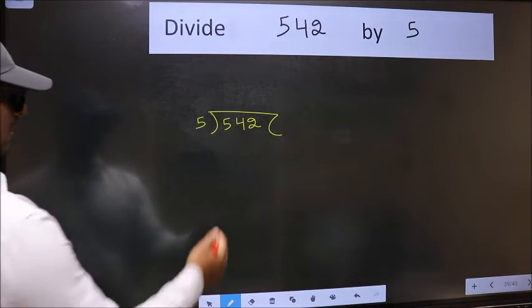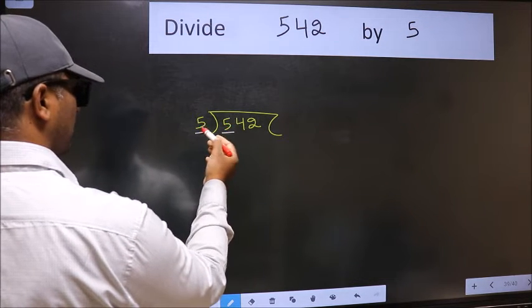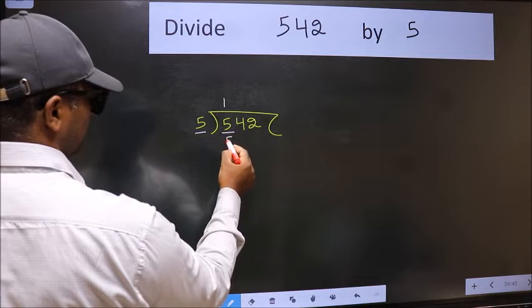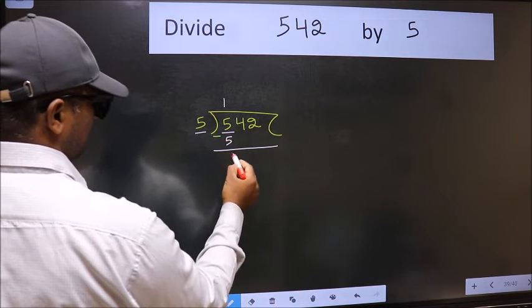Next, here we have 5 and here also 5. When do we get 5 in the 5 table? 5 once 5. Now, we should subtract. We get 0.